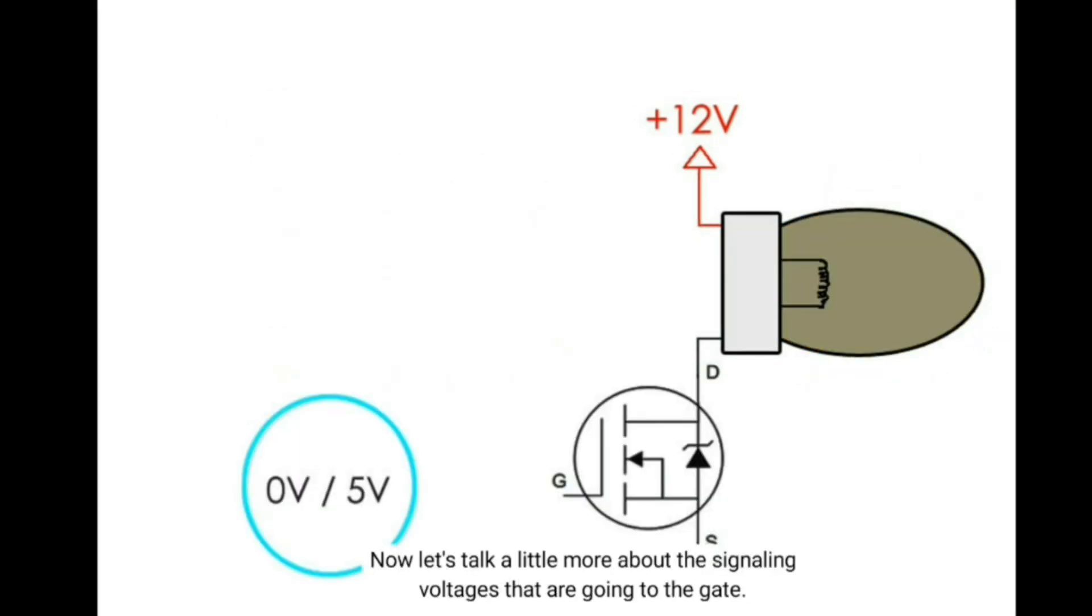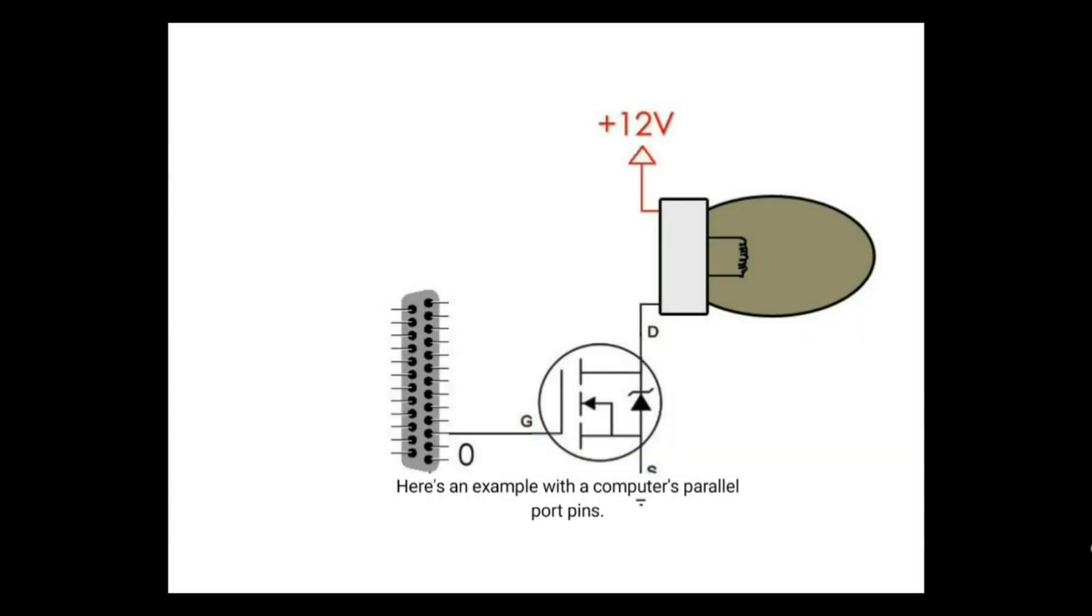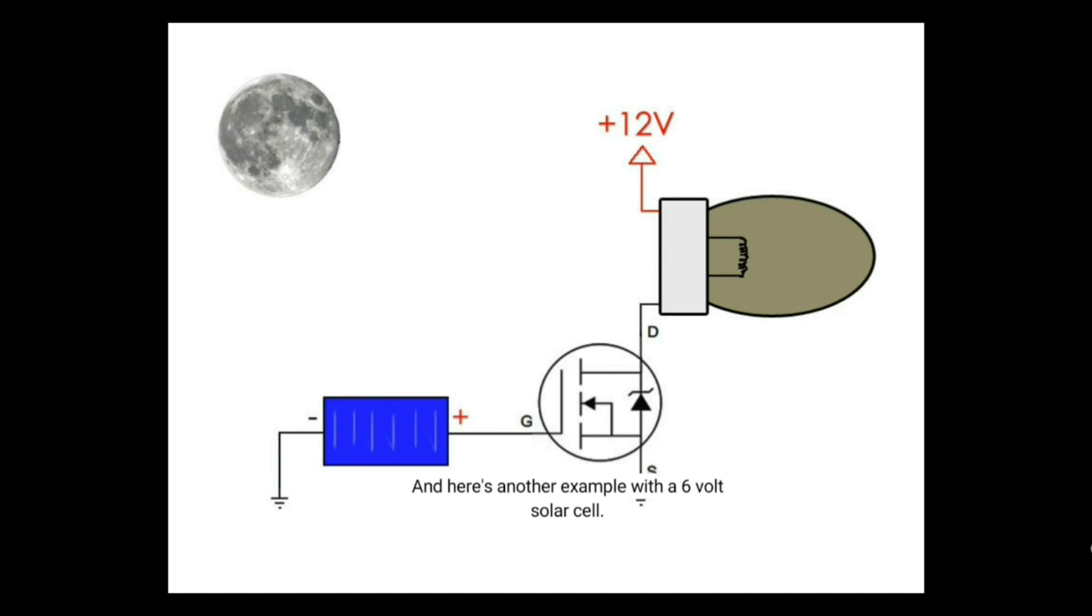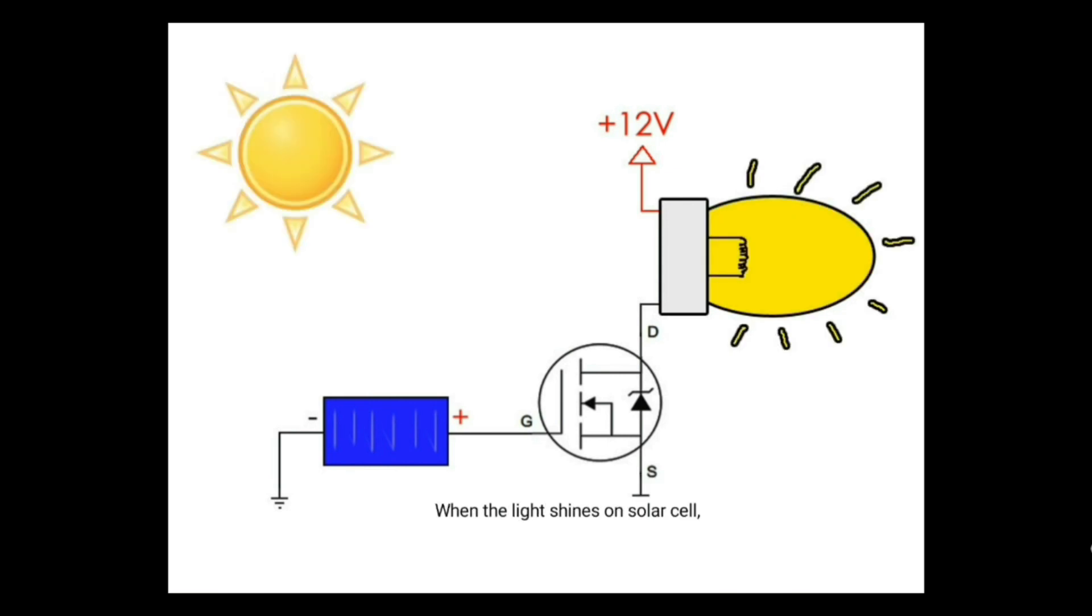Now, let's talk a little more about the signaling voltages that are going to the gate. There are a lot of different ways to do it and that's why transistors are so much fun. Here's an example with the computer's parallel port pins. When the parallel port outputs a 1, which would be 5 volts, the transistor turns on. And here's another example with a 6 volt solar cell. When the light shines on the solar cell, the gate receives at least 5 volts so the transistor turns on. And there are hundreds of other ways you could switch the transistor on, so basically you can control anything with anything.